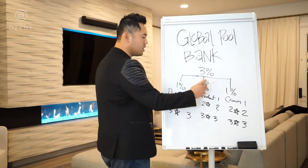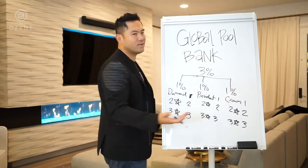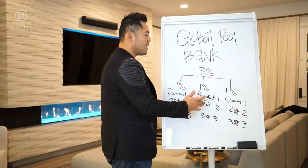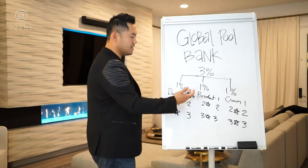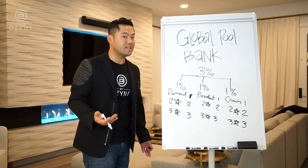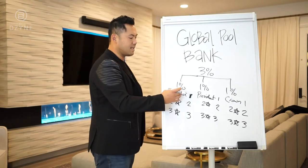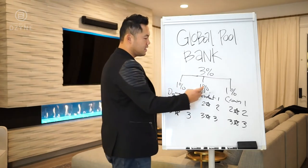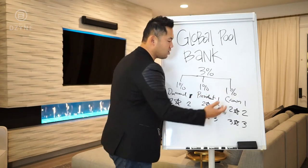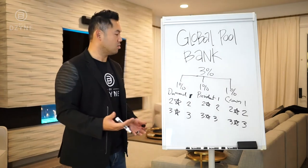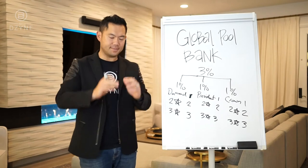Realistically, if there's a million dollars in each pool: there might be ten Crowns, maybe a thousand Presidents, and maybe ten thousand Diamonds. A million dollars divided by ten thousand shares is a smaller amount per share, a million divided by a thousand is more, and a million dollars divided by ten is a lot more. That's how the Global Pool Bank is calculated.